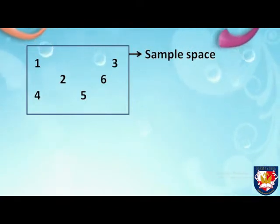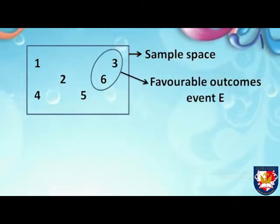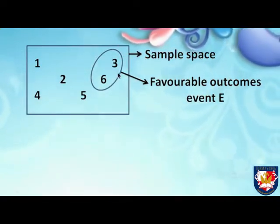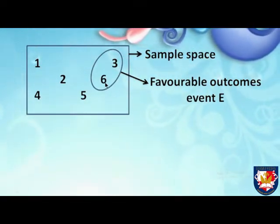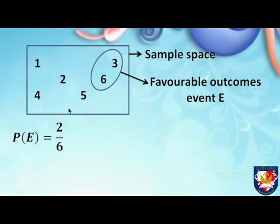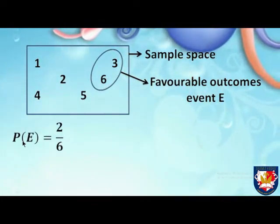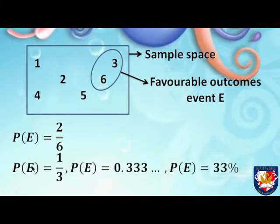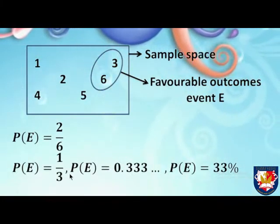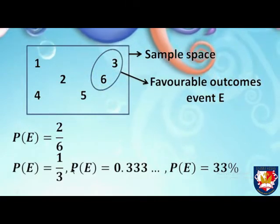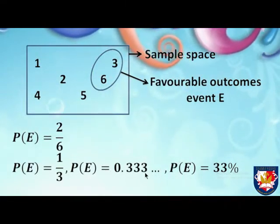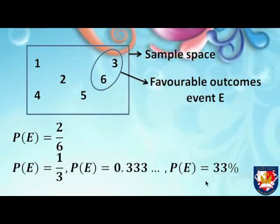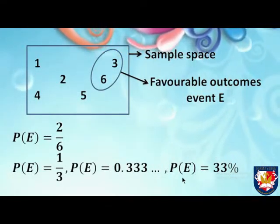The favorable outcomes of event E are three and six, because event E is multiples of three. So the probability of E equals two over six, or one over three. You can also represent the probability as a decimal — 0.333 — or as a percentage, approximately 33%.